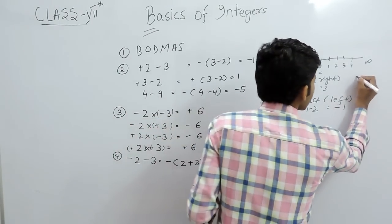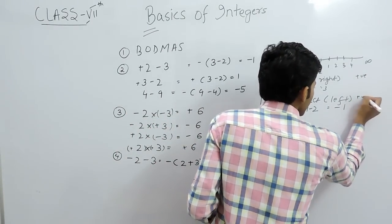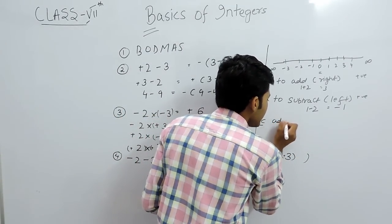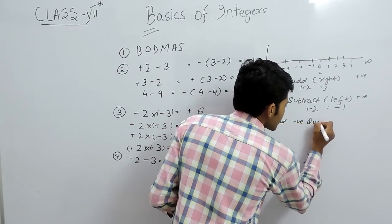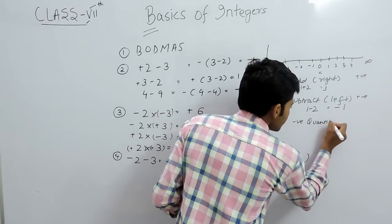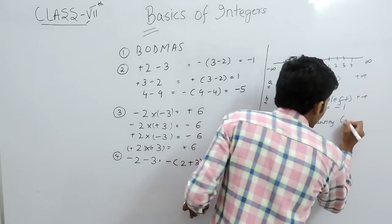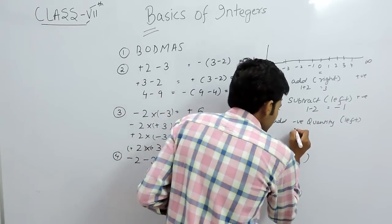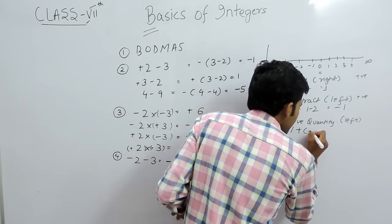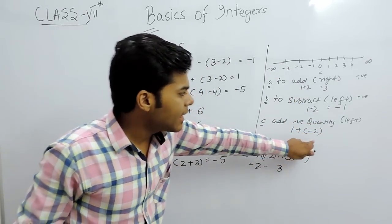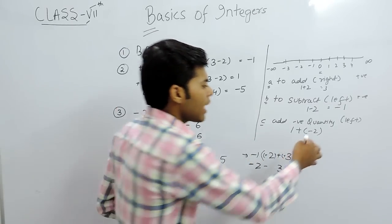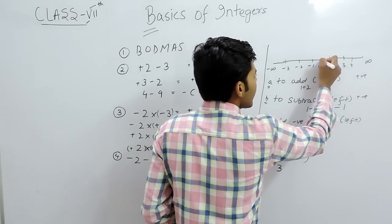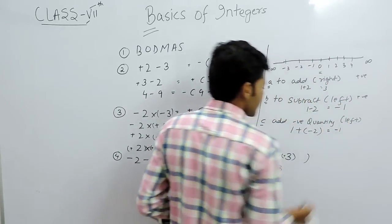When adding a negative quantity, we move to the left. For example, 1 plus minus 2: we start at 1 and move 2 steps to the left, giving us minus 1 again.